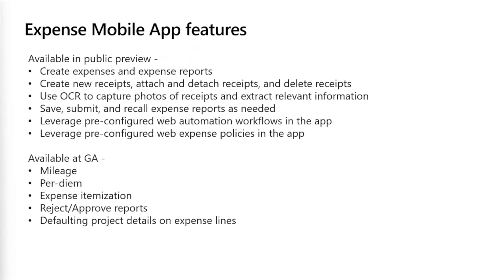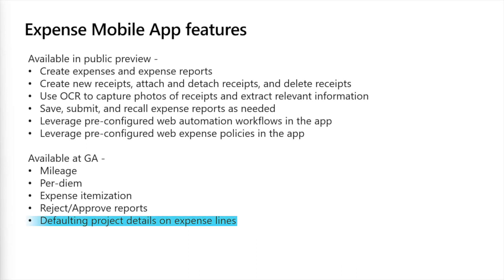The Expense Mobile App is a front end to the existing expense management module. It is currently in public preview and is planned to go GA in September 2023. We have provided the list of features available to validate in your environment as part of public preview. At GA, additional capabilities will be available, including mileage-based expenses, per diem for employees, itemization of expenses, and approval and rejection of expense reports. For project-based organizations, we are also looking to streamline defaulting project details on multiple expense lines so users don't have to enter project-related details on individual expense lines.